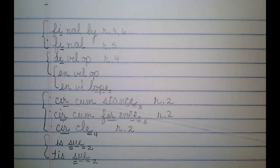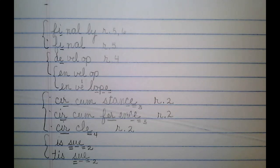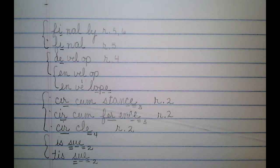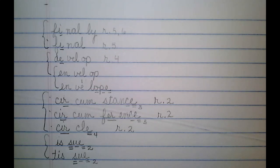So those are our ten words for today. Let me read them for spelling first, and then we'll read them for reading. Finally, final, develop, envelope, envelope, envelope. Now for reading: finally, final, develop, envelope, envelope, circumstance, circumference, circle, issue, tissue.